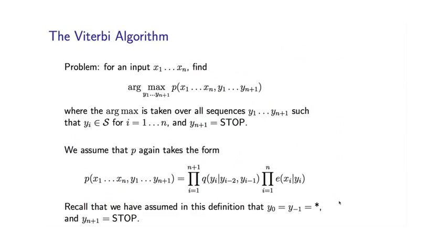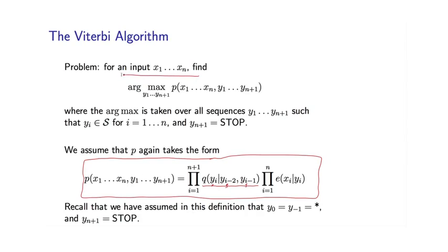So if we go back to this slide, the critical thing we're going to leverage in getting around this problem is that our probability distribution takes this form. And critically, these trigram parameters only depend on subsequences of length 3. So this model has a particular structure. And that will actually allow us to do search for the most likely tag sequence to solve this problem much more efficiently than brute force search.